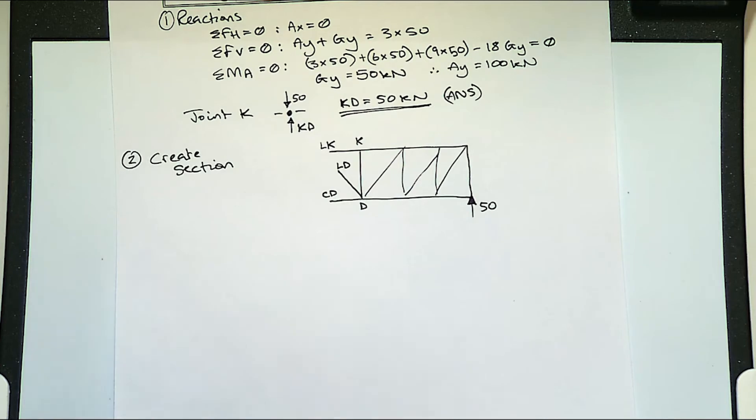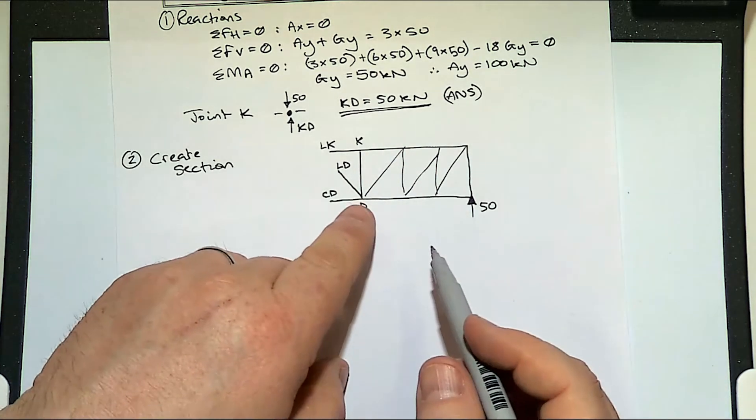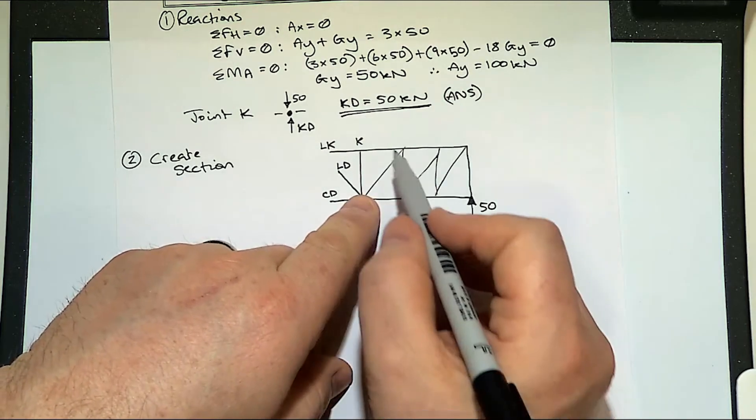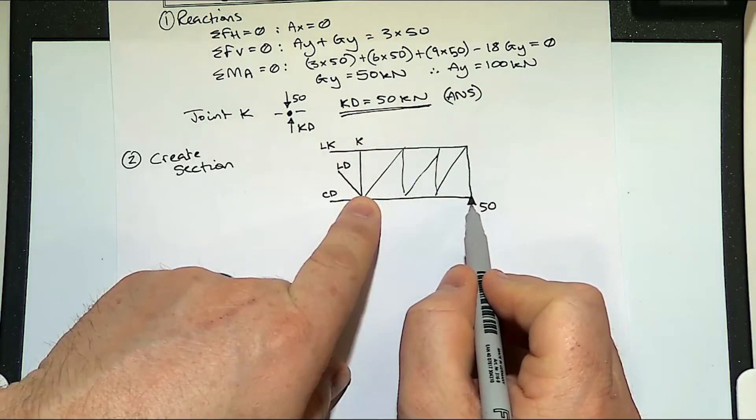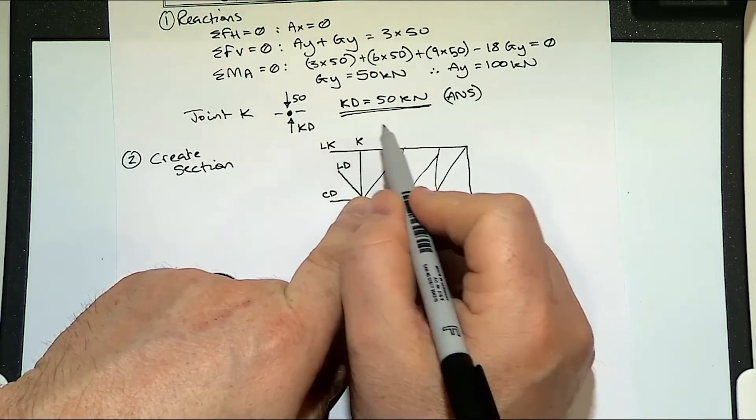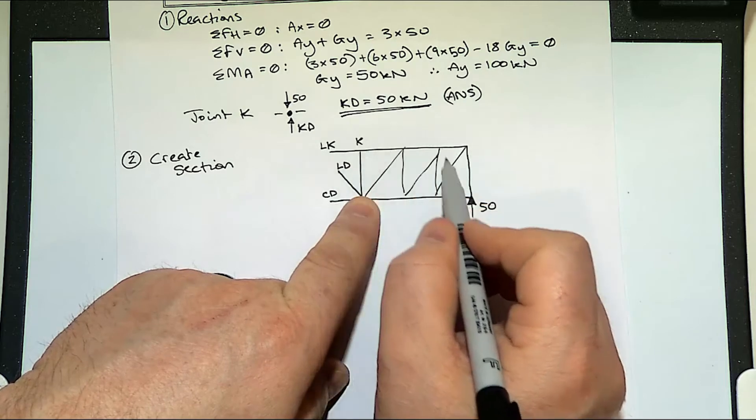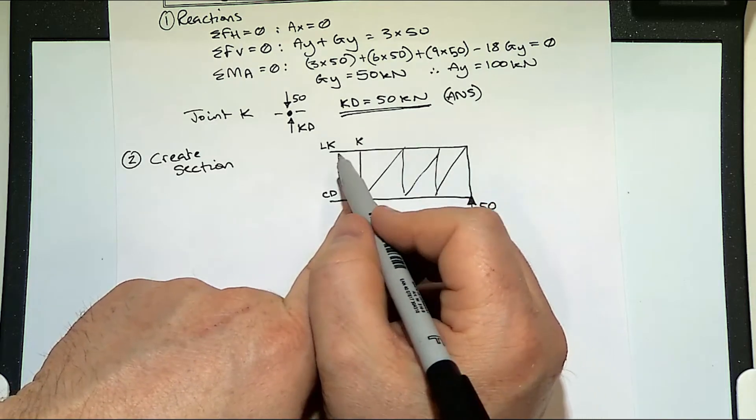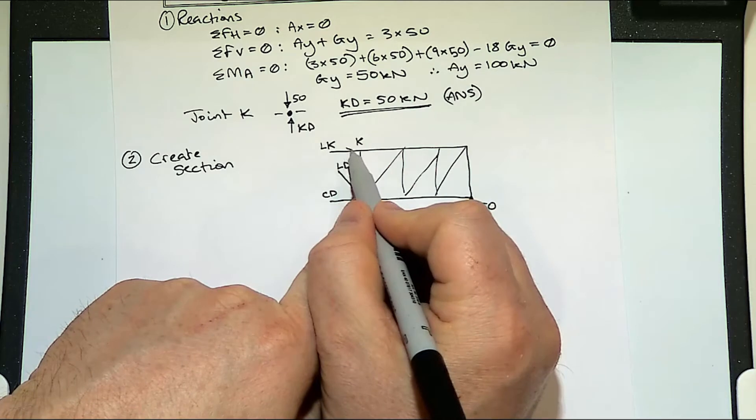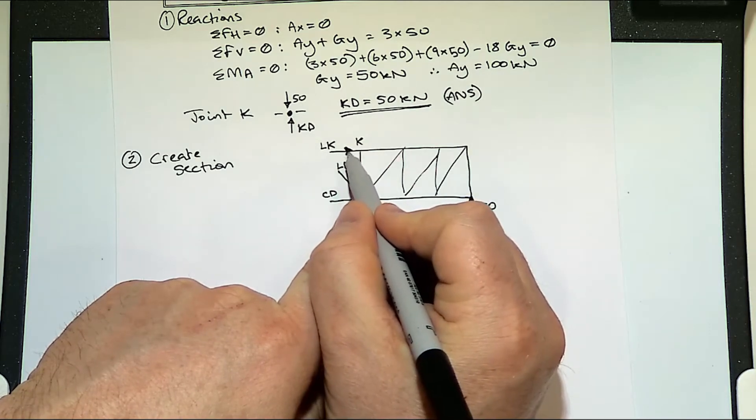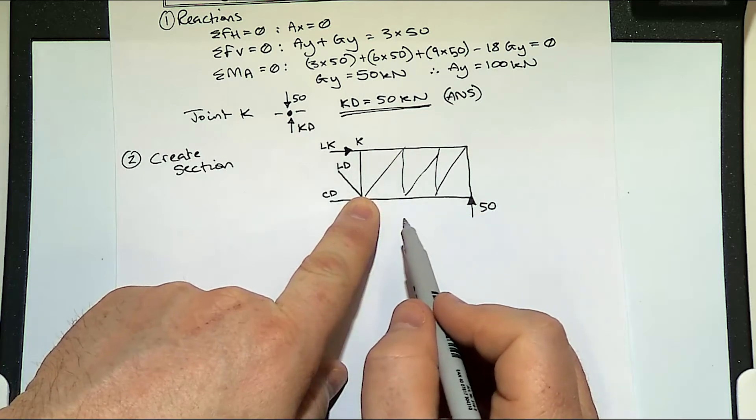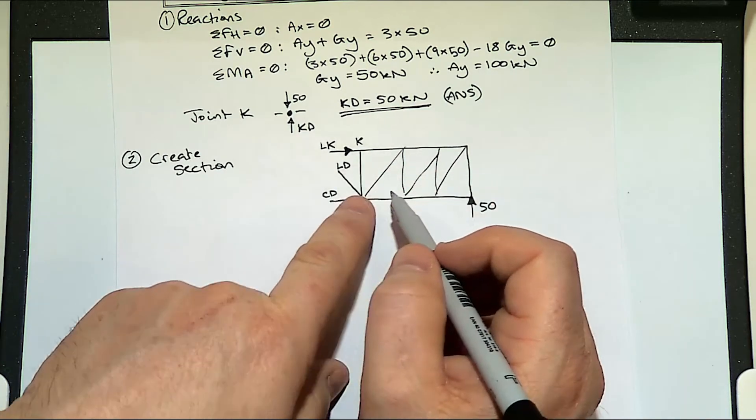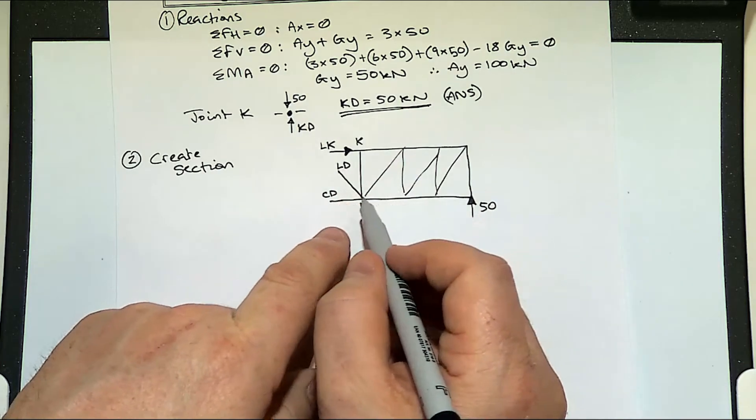Now we have to guess arrow directions. What I'll say is that if we were holding on to point D, and imagined this moving around my finger here, this 50 would be pushing around anti-clockwise. Therefore, this LK must be trying to send the beam around clockwise. I don't consider LD or CD, because it's passing through the point that I'm taking moments around.